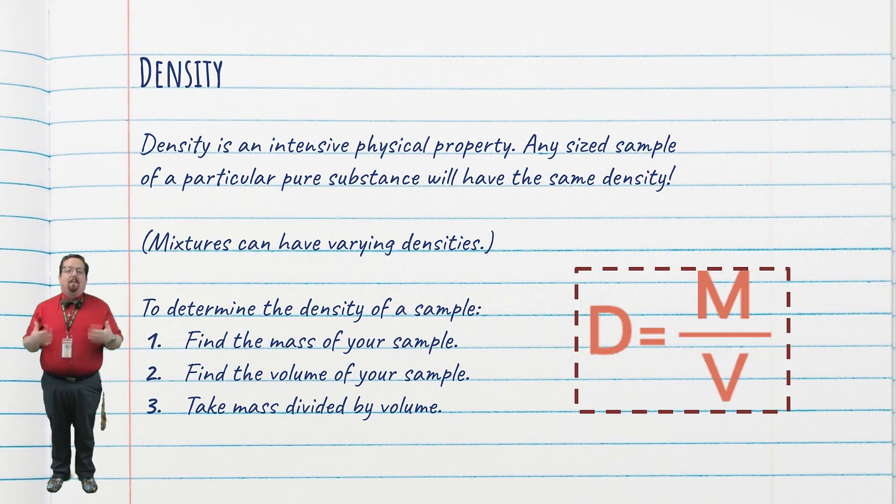You should have already had plenty of experience with density from 8th grade science, but here's a short refresher. Density is an intensive physical property. That means that any sized sample of a pure substance will have the same density as any other sample of that same pure substance. To find density, you measure the mass, measure the volume, then take the mass divided by the volume. This usually gives us grams per milliliter or grams per cubic centimeter. We could do this with mixtures as well, but the density of the mixture will vary depending on how much of each substance is in the mixture.